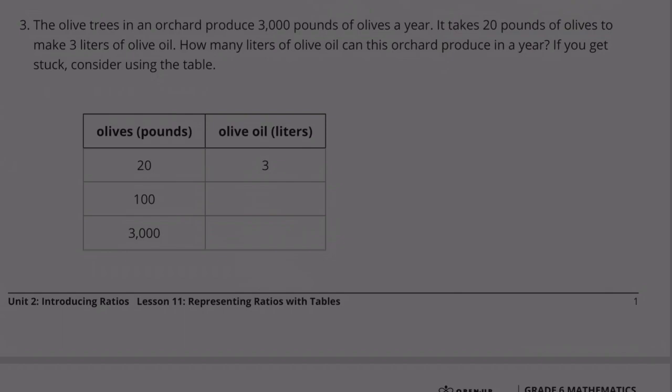If you get stuck, consider using the table. 3,000 pounds of olives in a year, that's represented down here. So we need to figure out this.